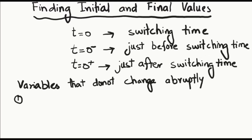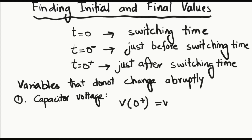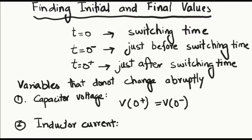There are two key points to keep in mind in determining the initial conditions. We consider variables that do not change their values abruptly. First, capacitor voltage is always continuous, so V at time zero positive equals V at time zero negative — the voltage across the capacitor just before and after the switching time is equal. Second, inductor current is also continuous — the current through the inductor before and after the switching time is equal, as it does not change abruptly.